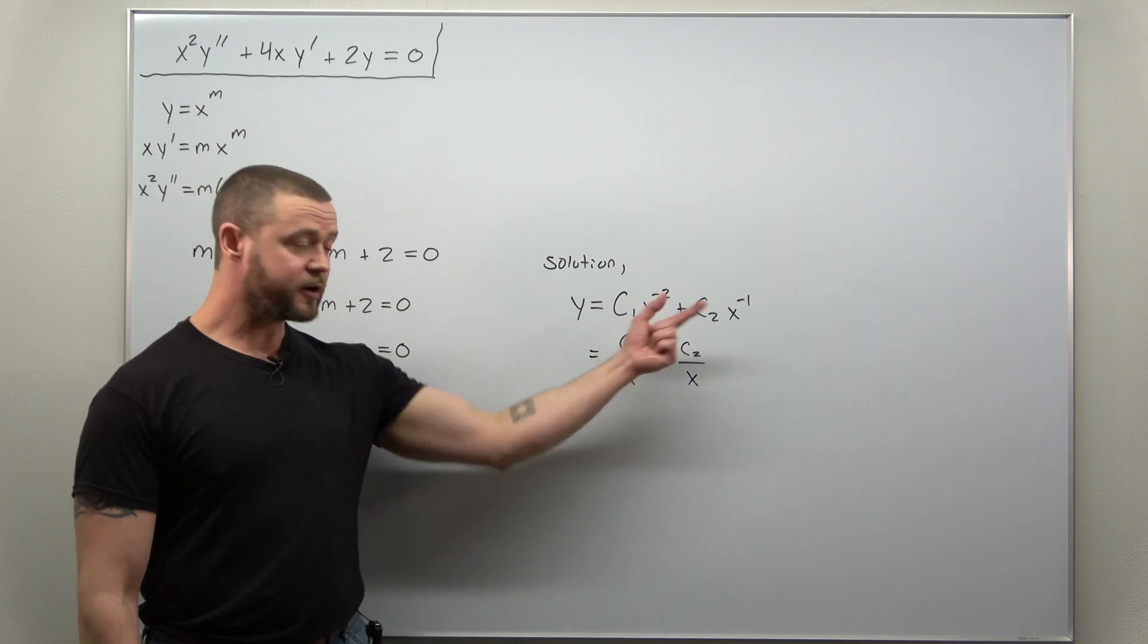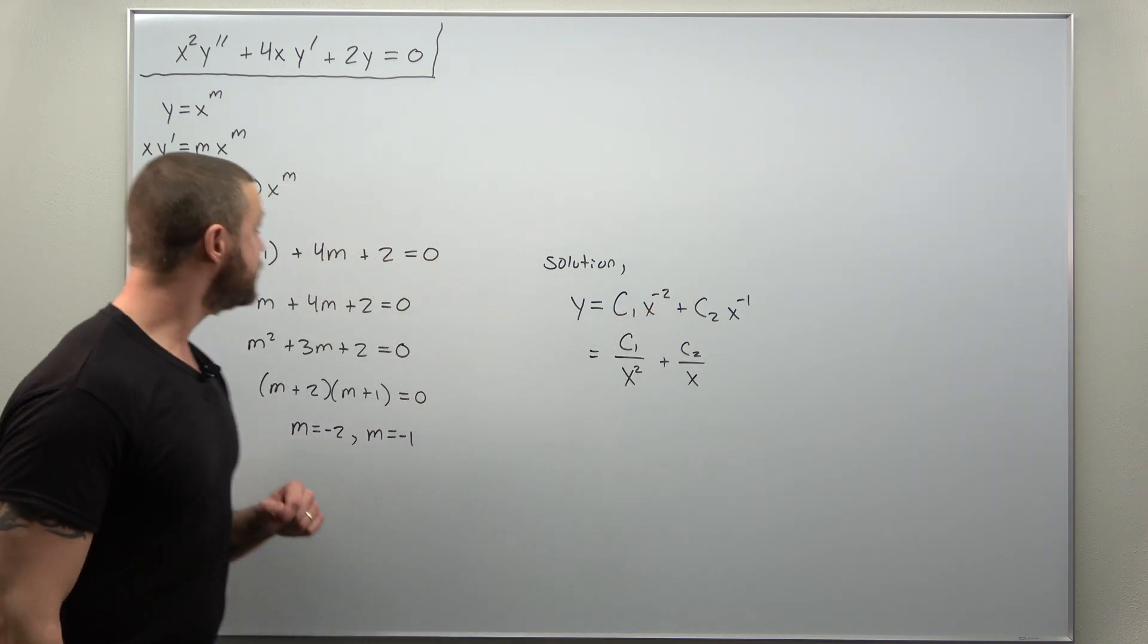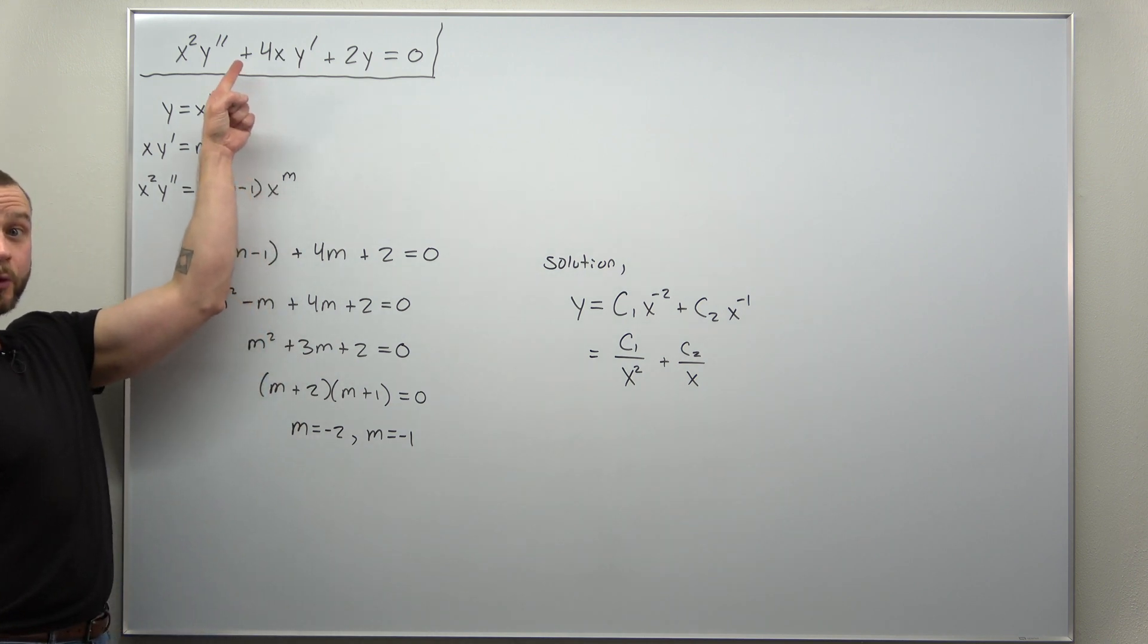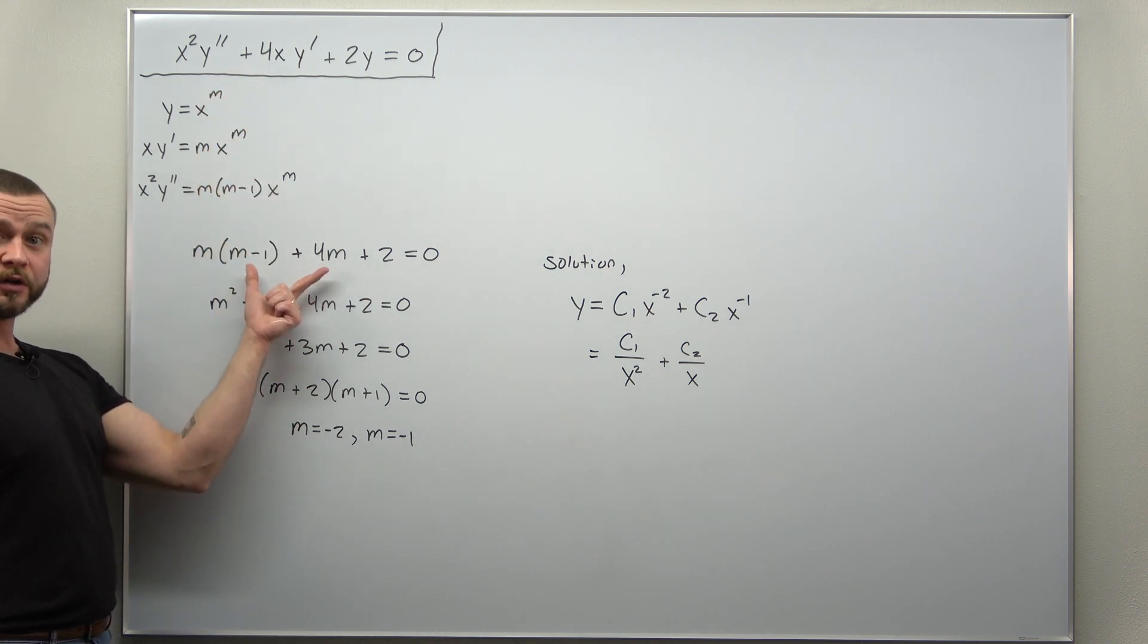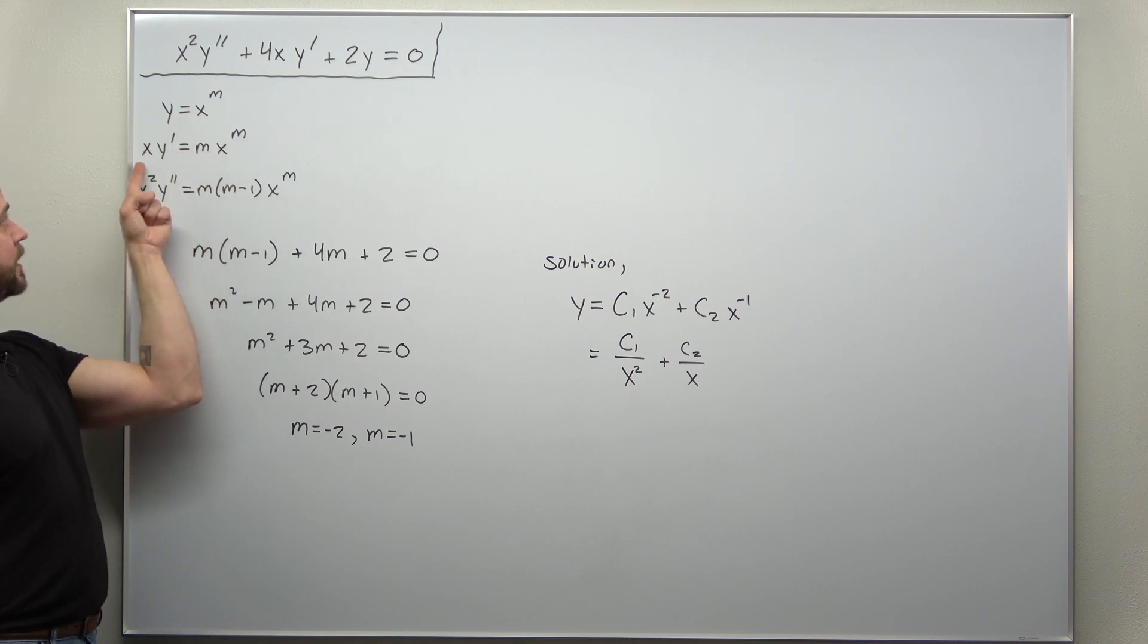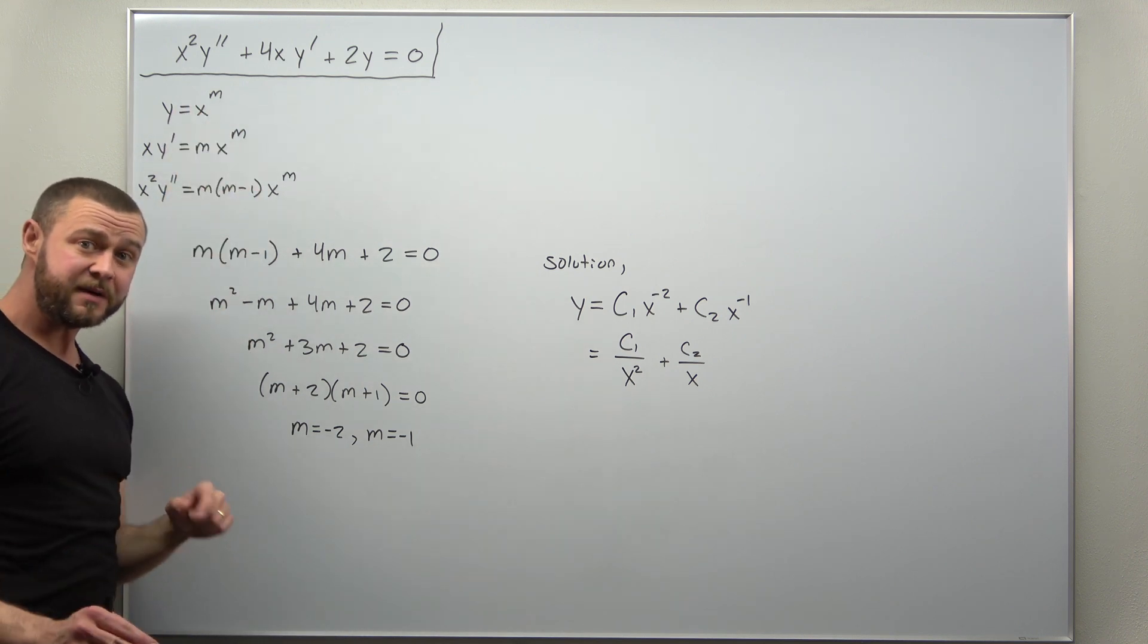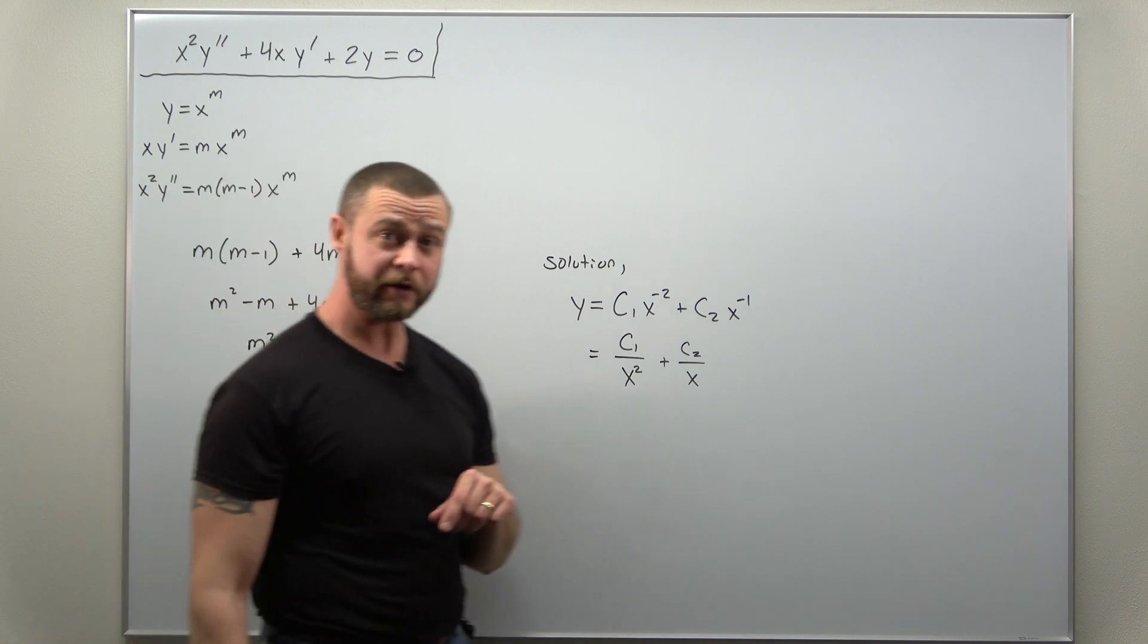Just a different way to write your solution. Again, this goes very quick if you know how to convert from the Cauchy-Euler equation to the auxiliary equation. Make sure you know these three quantities: y, xy prime, and x squared y double prime. Those are always the same in every Cauchy-Euler equation.